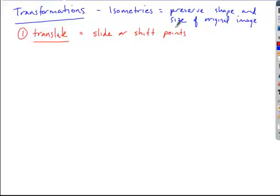A translation looks like the following. If we took our original point, which was 5, negative 3, here's point A. That's called our preimage, or the original value.